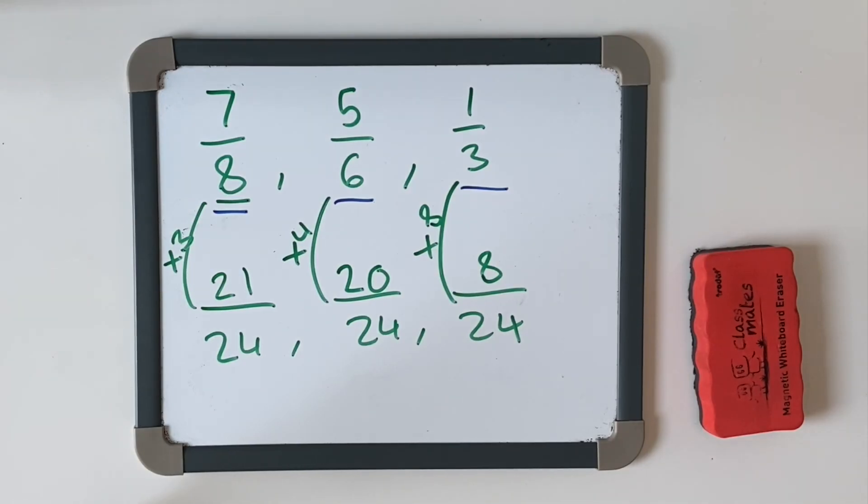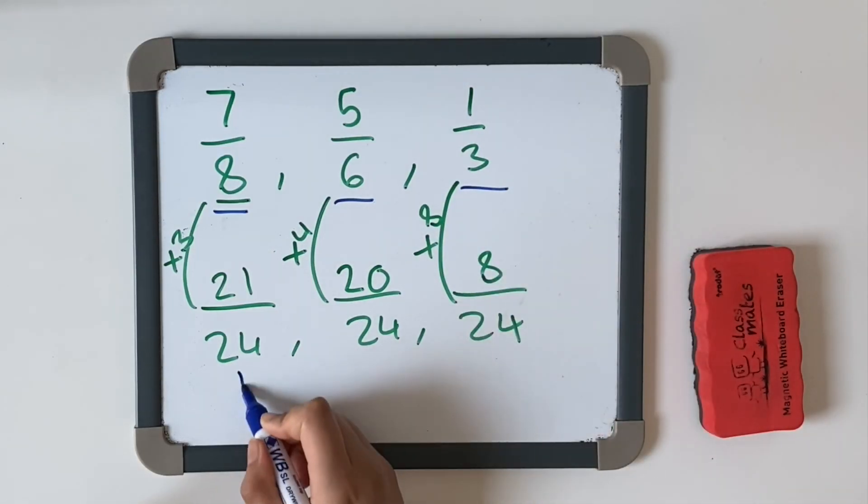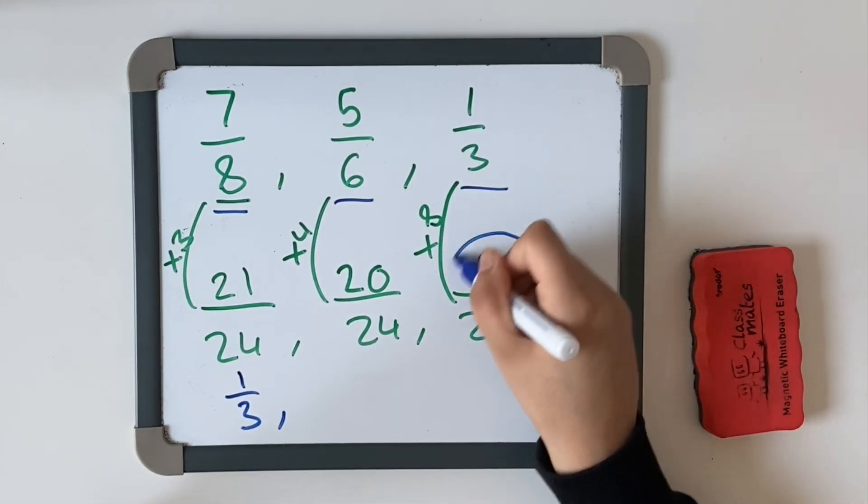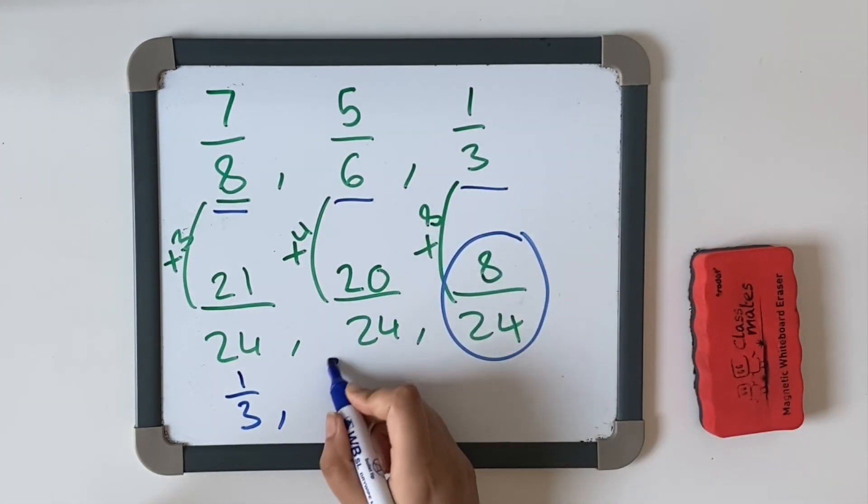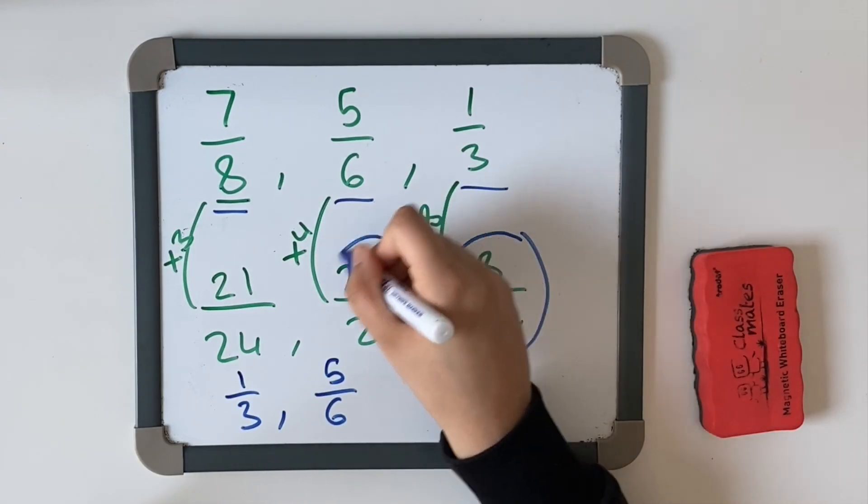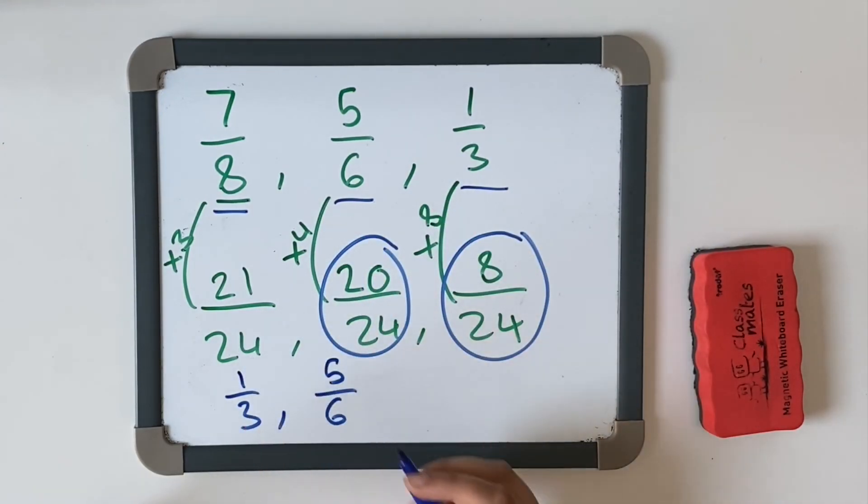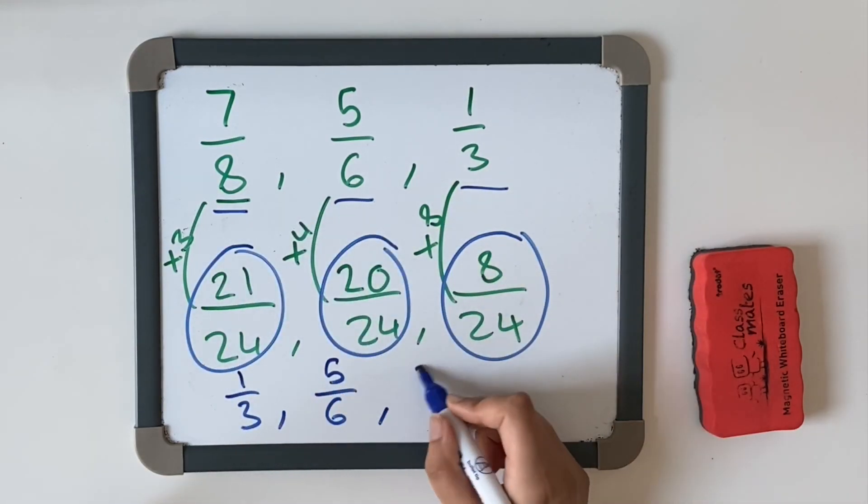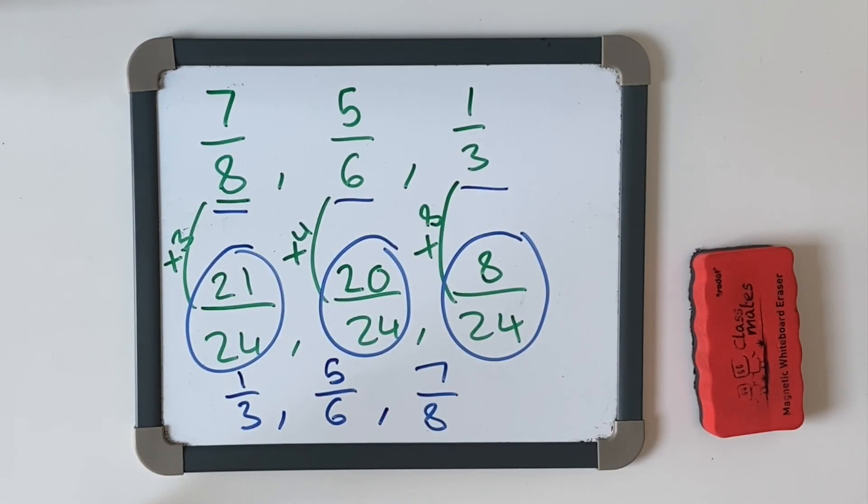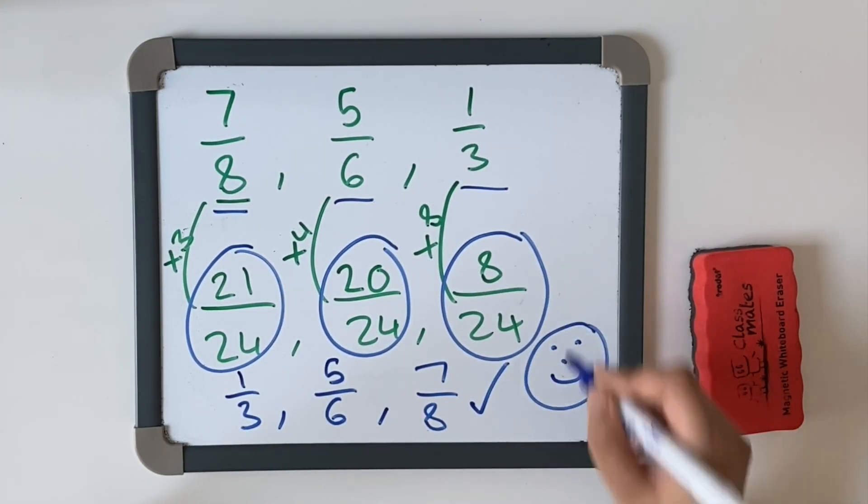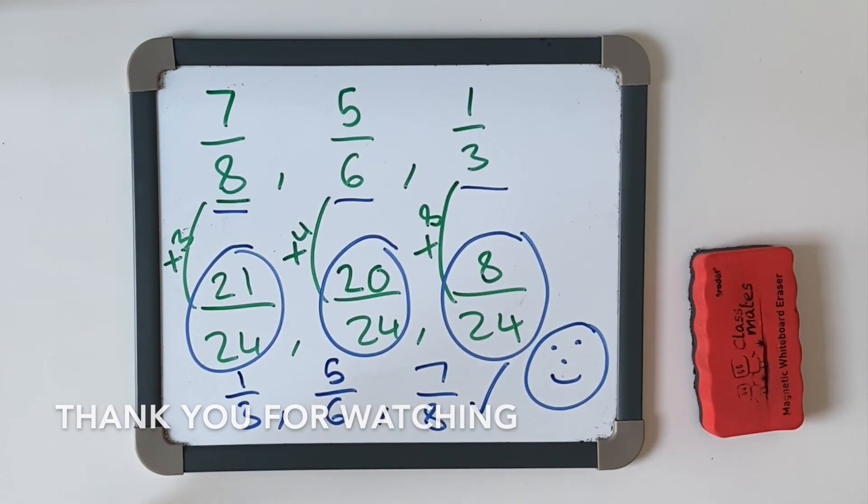It's pretty obvious that eight twenty-fourths is the smallest. So I'm going to put one-third first. And then it's going to be five-sixths. And then our greatest one is 21 twenty-fourths, which is seven-eighths. And there you go. That's it really. That's how we arrange fractions. Well done if you got that right. You are now a star at ordering fractions.